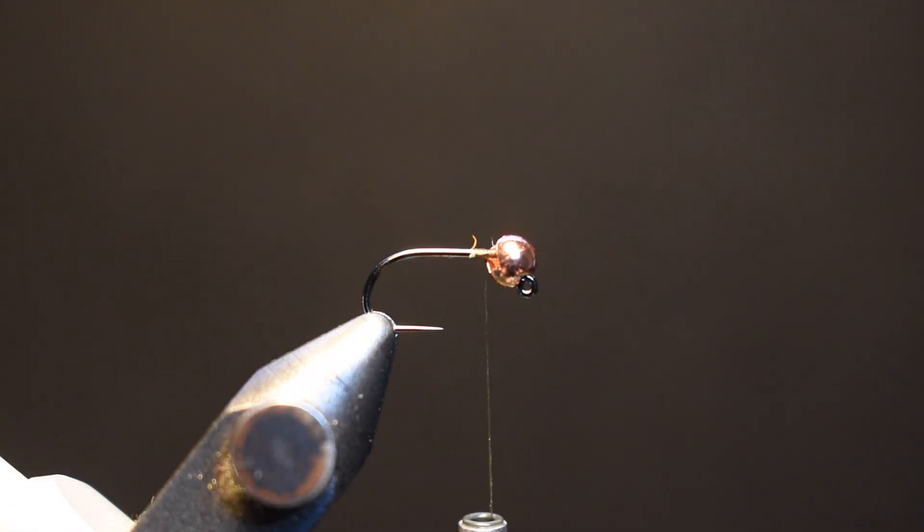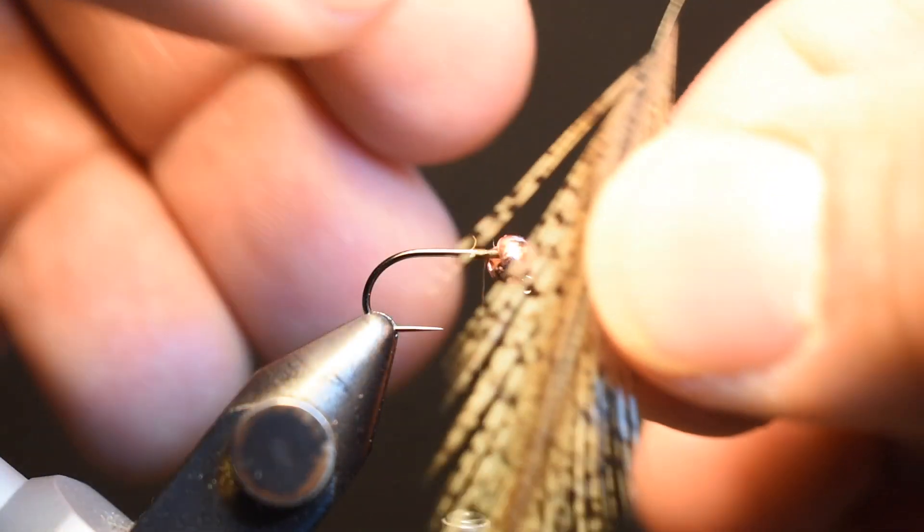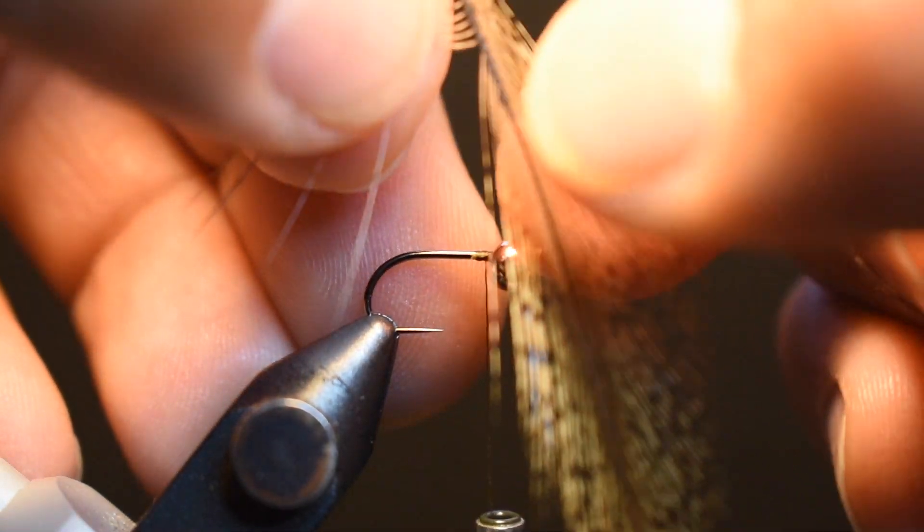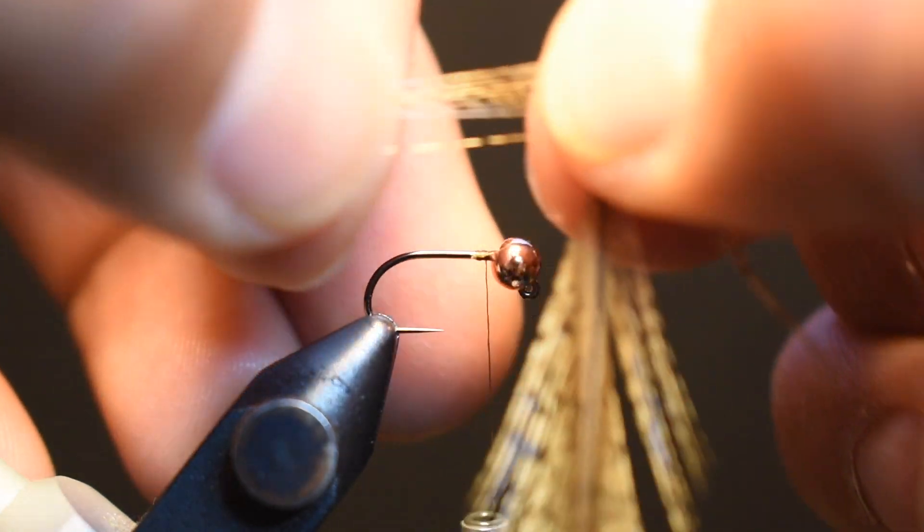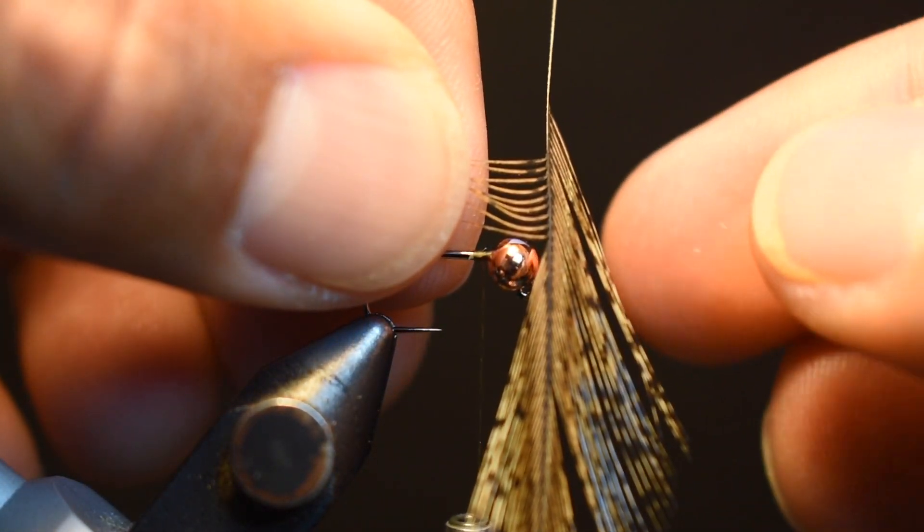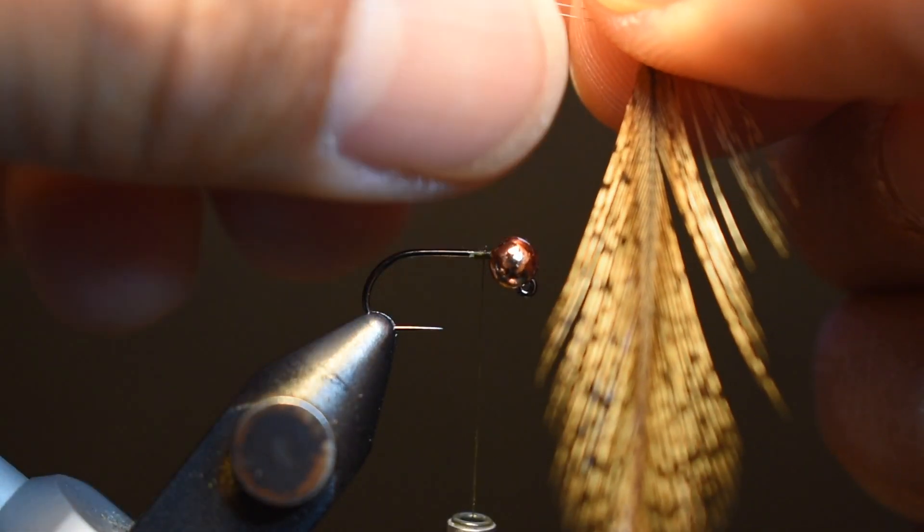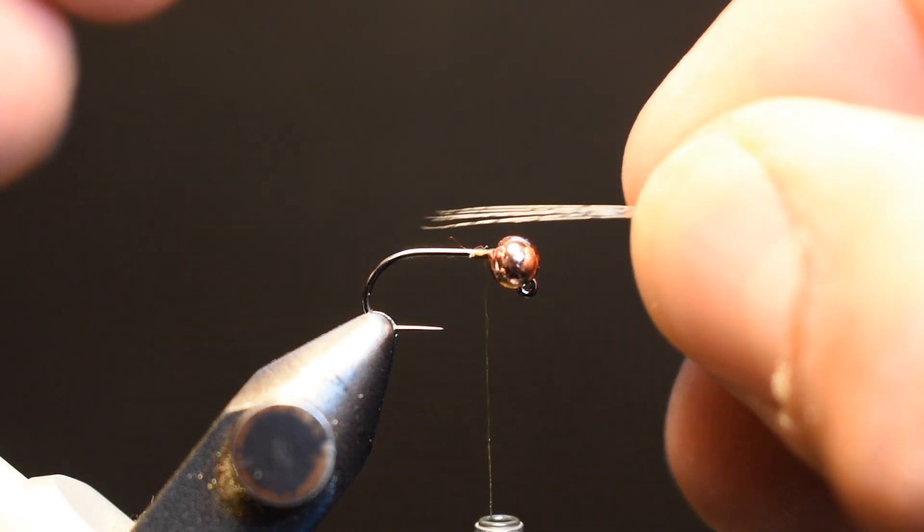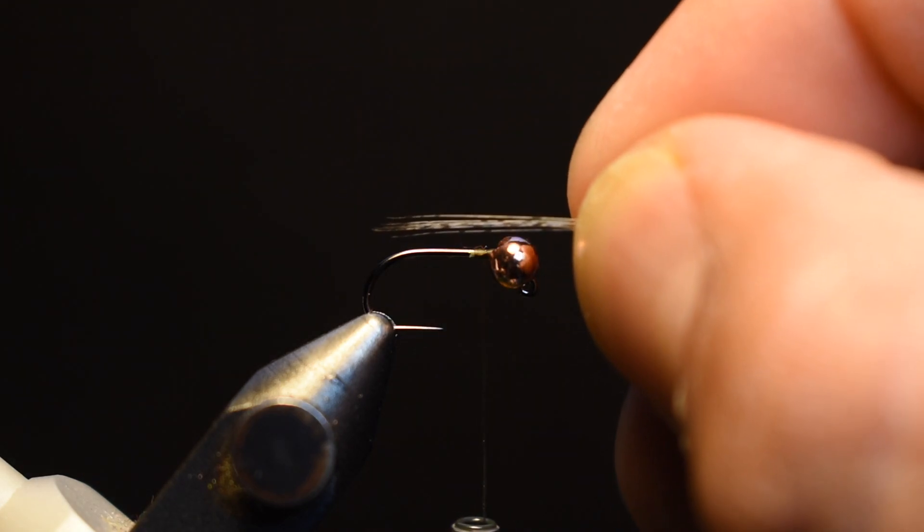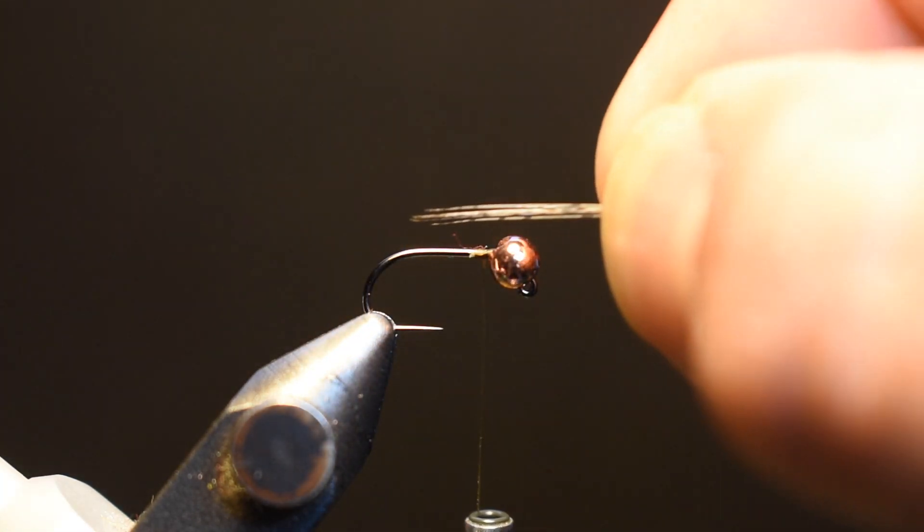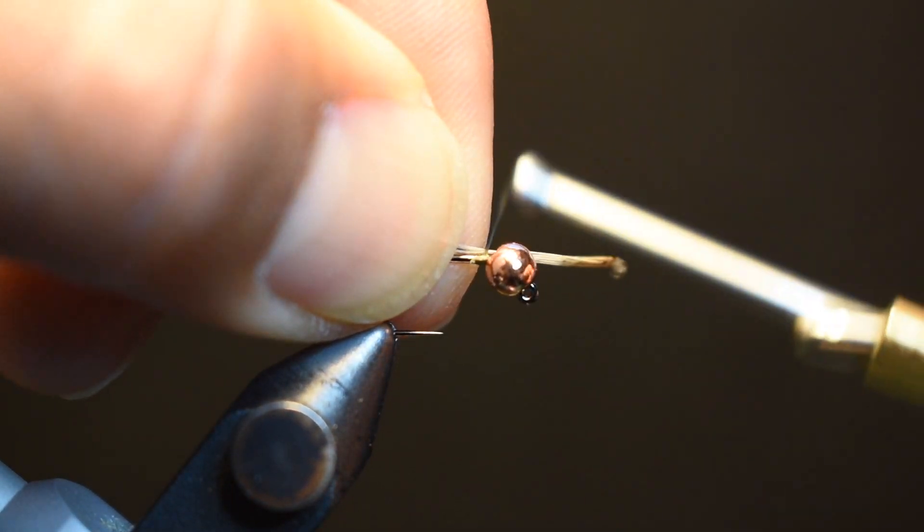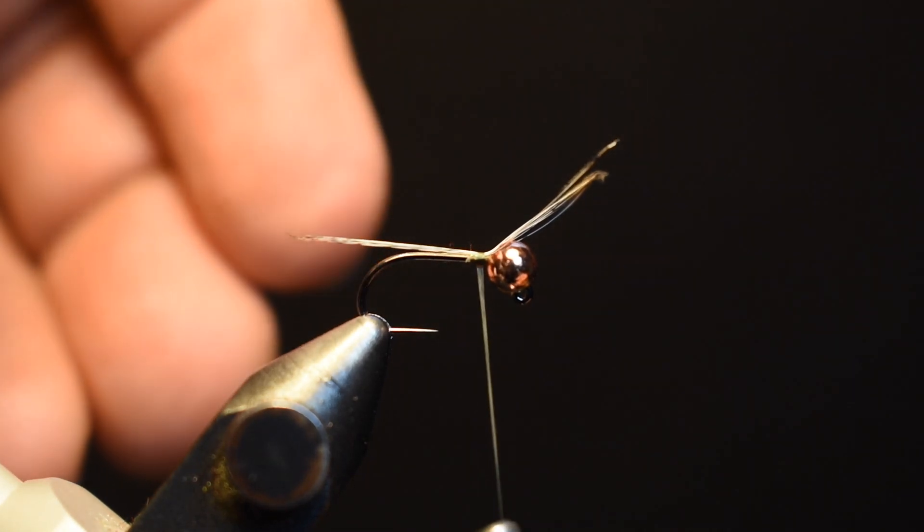Use Coq de Leon for the tail. For this one, we're going to use about 10 to 12 fibers—roughly a quarter inch of material on the stem if that's easier for you to gauge. Rip the stem away and make sure all your tips are lined up. The tail should be roughly the length of the body, from the back of the bead to the bend of the hook. That's the reference for figuring out your dimensions. About right where I want it.